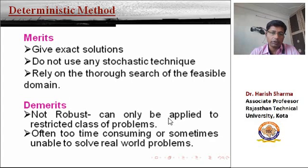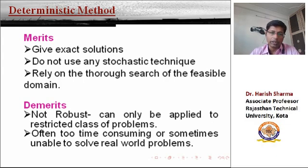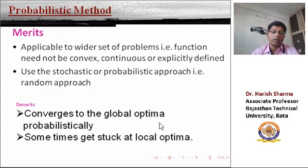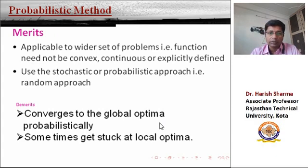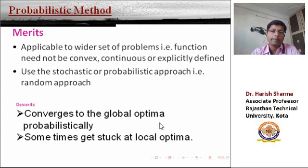So these deterministic algorithms will not be beneficial for that kind of problems. If a deterministic approach is not available for complex or optimization problems, only then we apply the probabilistic methods. Probabilistic methods give near-optimal solutions, not the optimal solutions. The probabilistic methods have the merit that they can be applied to a wider sector of problems.